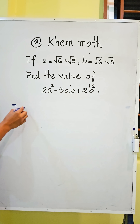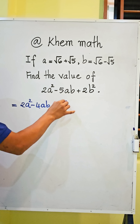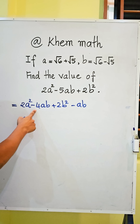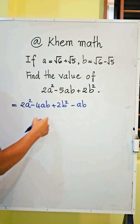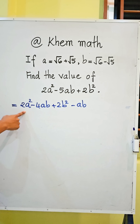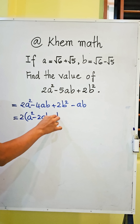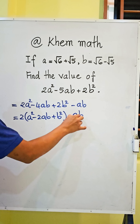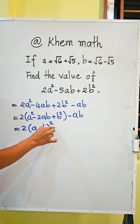We can rewrite the expression as a squared minus 4ab plus 2b squared minus ab. Combining negative 4ab and minus ab gives negative 5ab. Taking 2 as a common factor, we get 2 times (a squared minus 2ab plus b squared) minus ab.